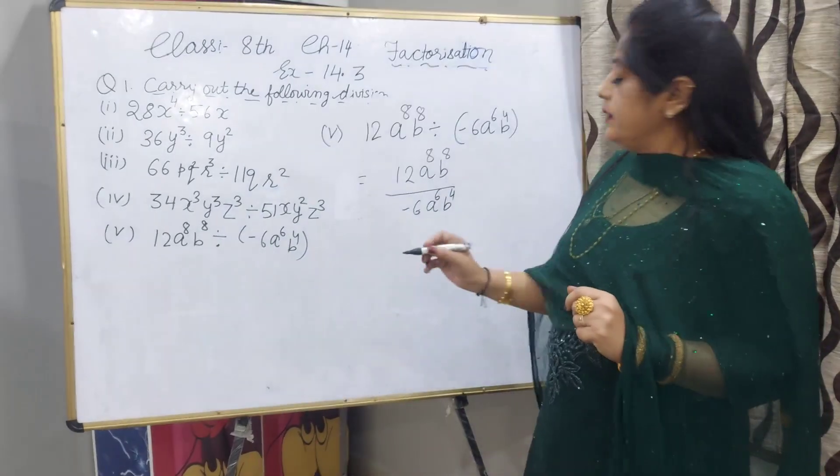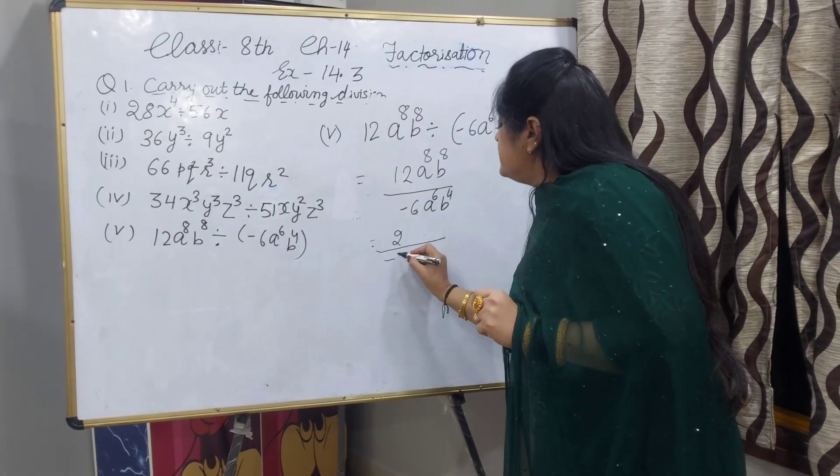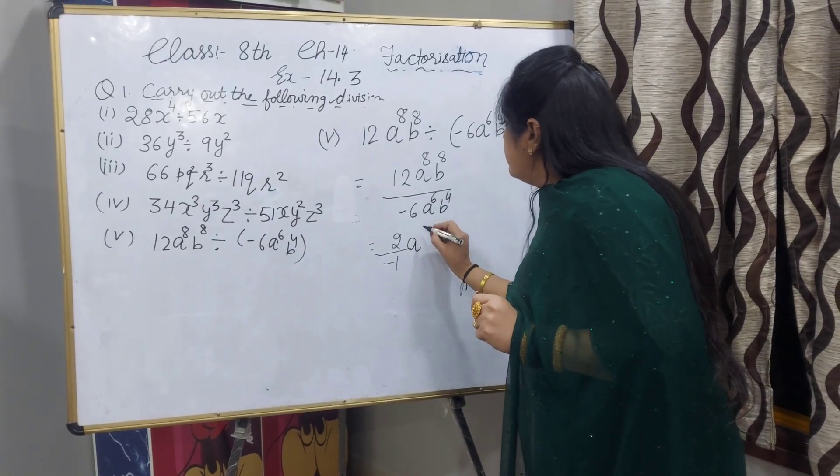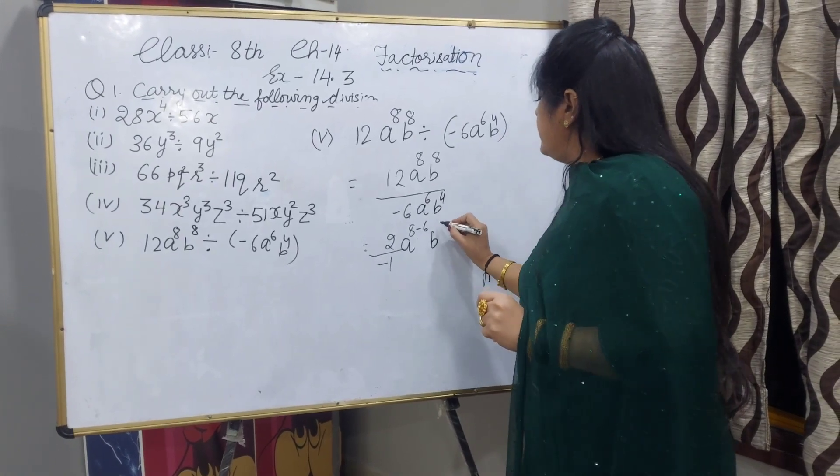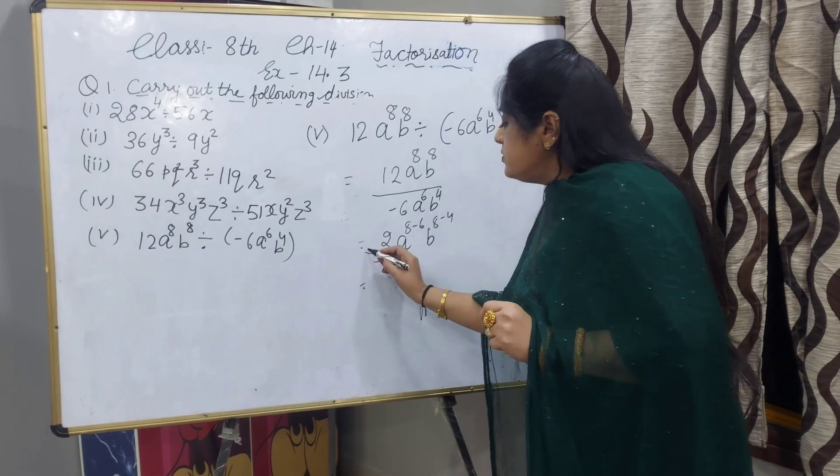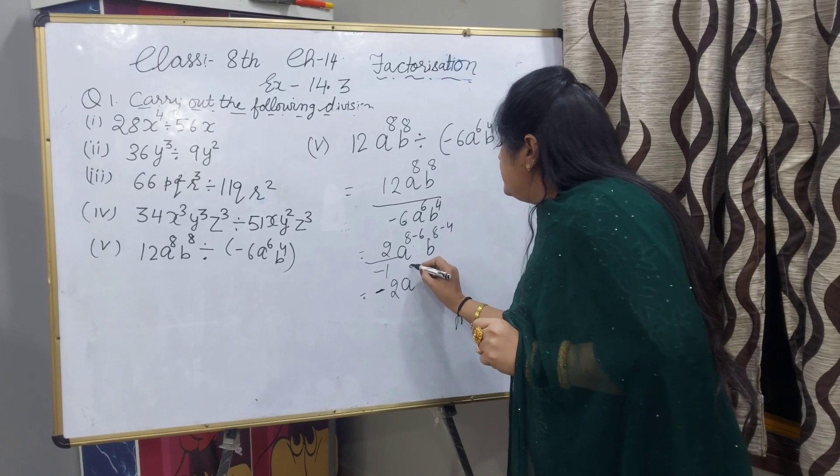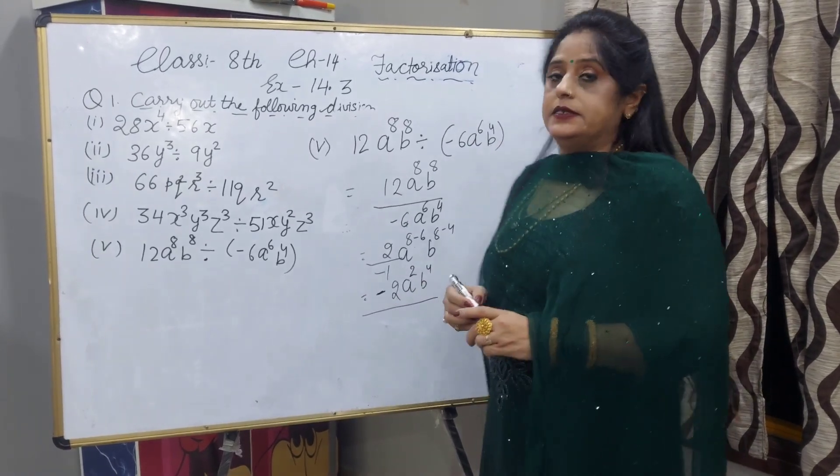6 times 2 is 12. You can write here 2, and minus will be here. And a power 8 minus 6, b power 8 minus 4. This minus you can write in center. a power 2, and b power 4. That will be your answer.